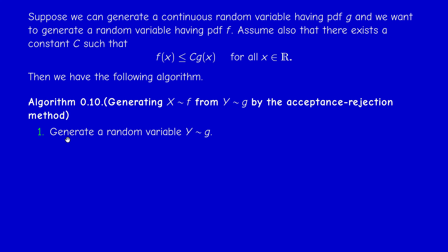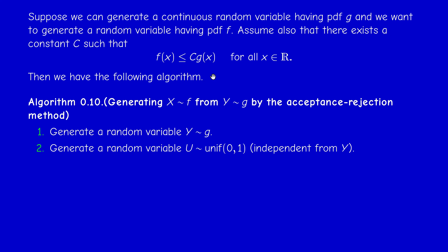Here's the algorithm. Suppose we know how to generate a random number following a distribution g, a pdf g, and we want to generate a continuous random variable with probability density f, such that f and g satisfy the inequality. Usually we take the best constant — the supremum of f(x) over g(x). First, we generate a random variable Y, since we know how to do that by assumption. Then we generate a uniform random variable U, independent of Y. If the random number generated is less than f(Y) over the constant c times g(Y)...